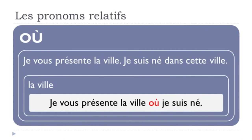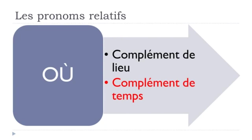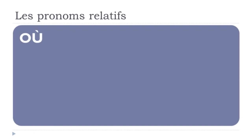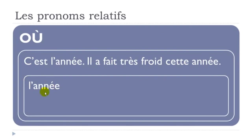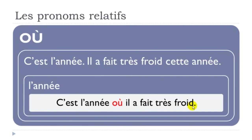Now 'où' for time (complément de temps): 'C'est l'année. Il a fait très froid cette année.' → 'C'est l'année où il a fait très froid.' 'Cette année' indicates time, and 'où' replaces it. The structure: first part unchanged, then 'où', then the sentence continues.